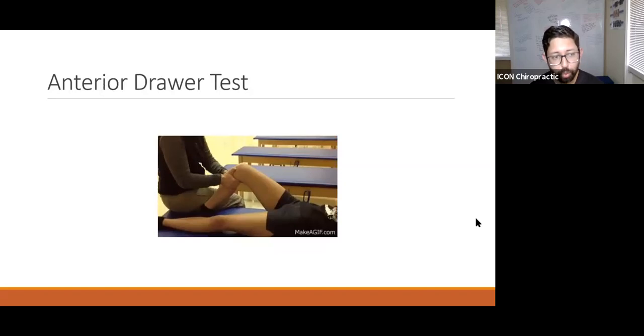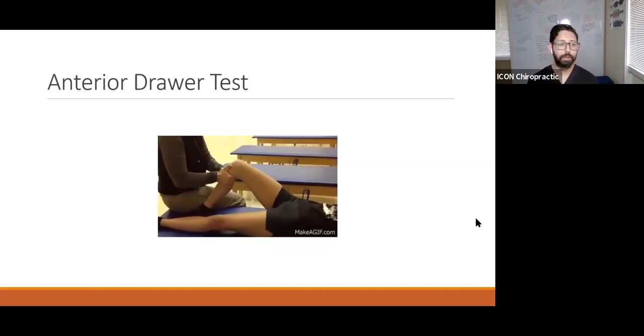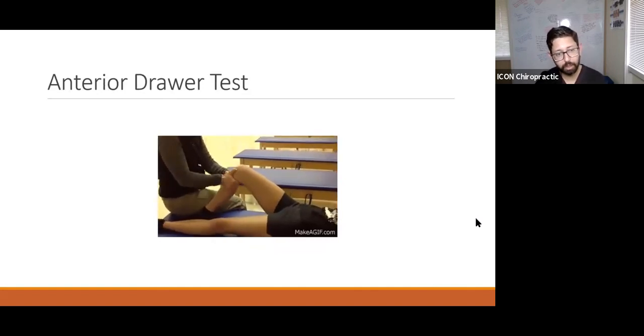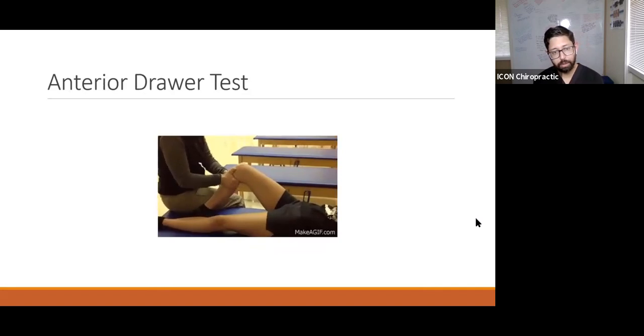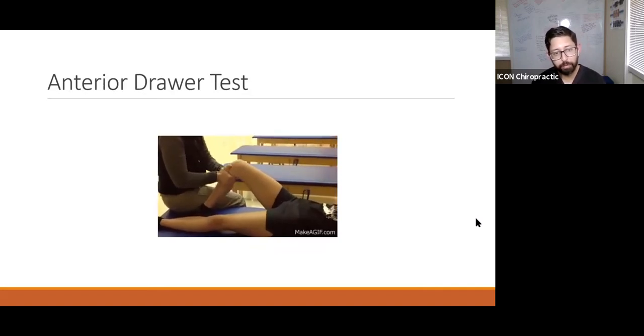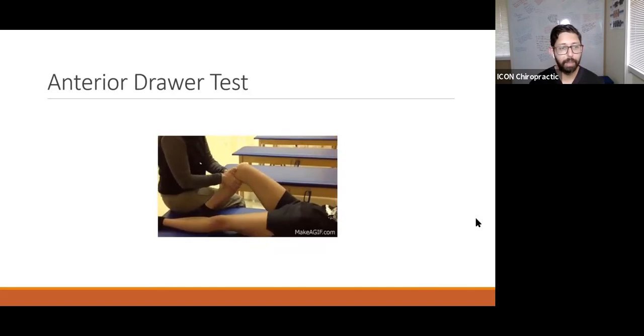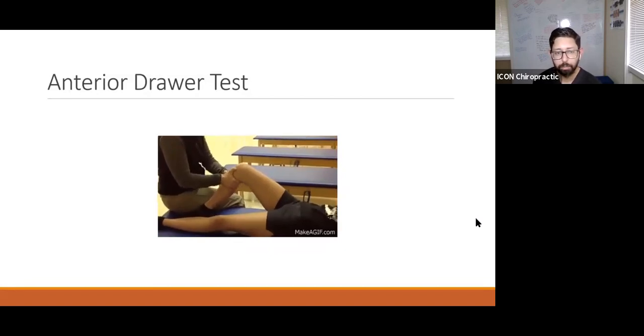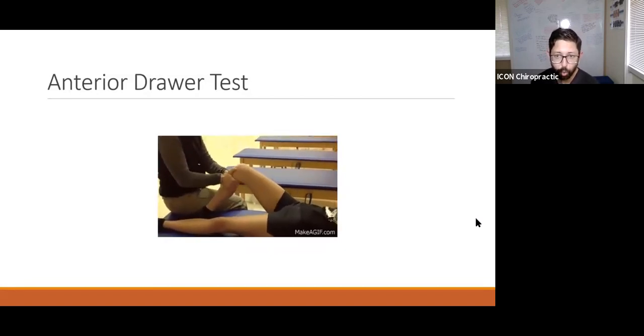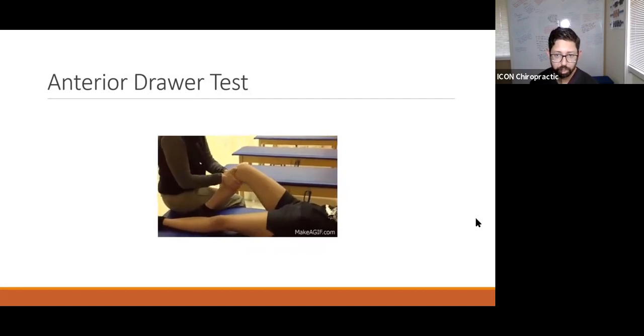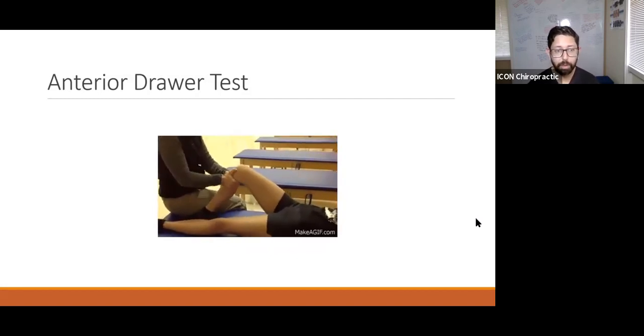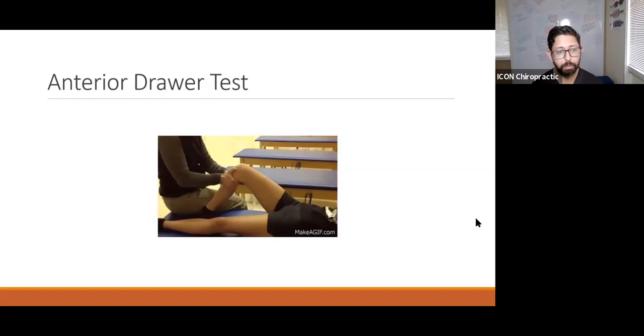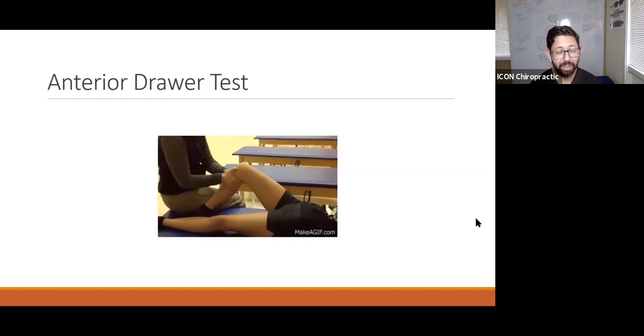Another good one is the anterior drawer test. As you can see, this person is sitting on the patient's leg and grabbing onto the knee, applying a little bit of forward and backwards pressure, and seeing if there is any large amounts of movement. That knee should be pretty locked in place, and the anterior ligament should be holding your shin in place. If it's moving too much or causing any pain, you should probably get that checked. There could be some ligamentous laxity.